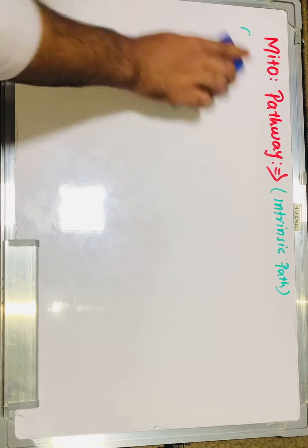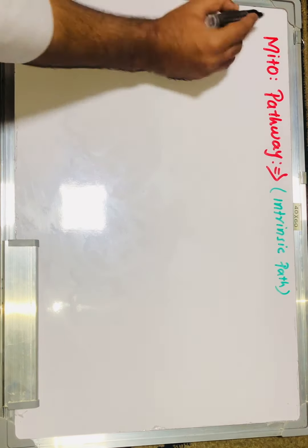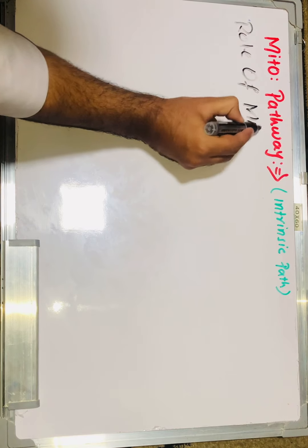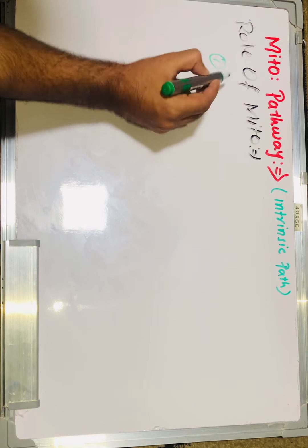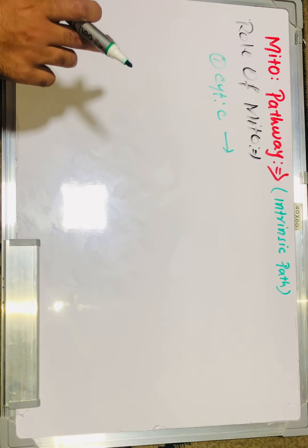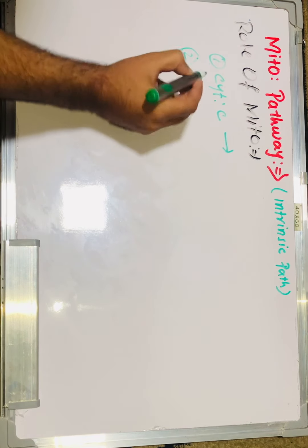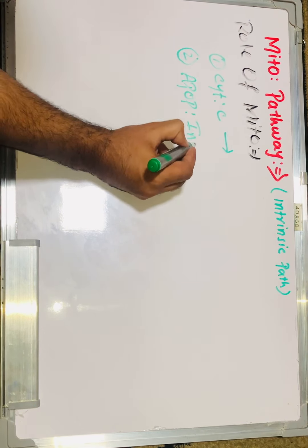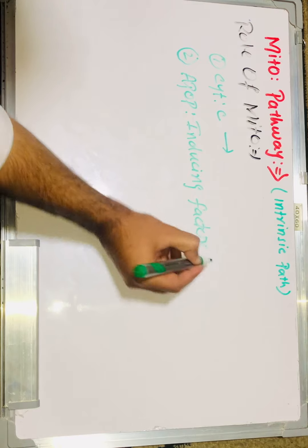What is the role of mitochondria in the process of apoptosis? We know that mitochondria has cytochrome C, which in the normal state is a carrier protein of the electron transport chain. Second, mitochondria also has apoptotic inducing factors.